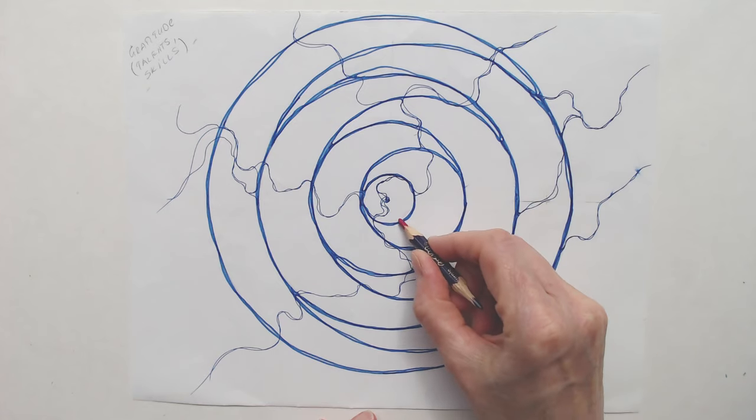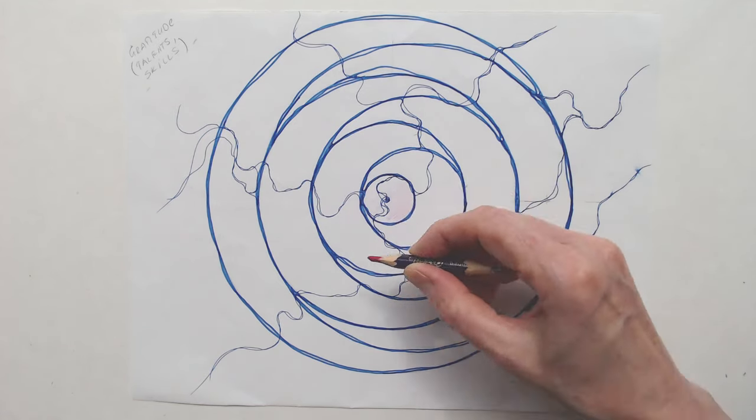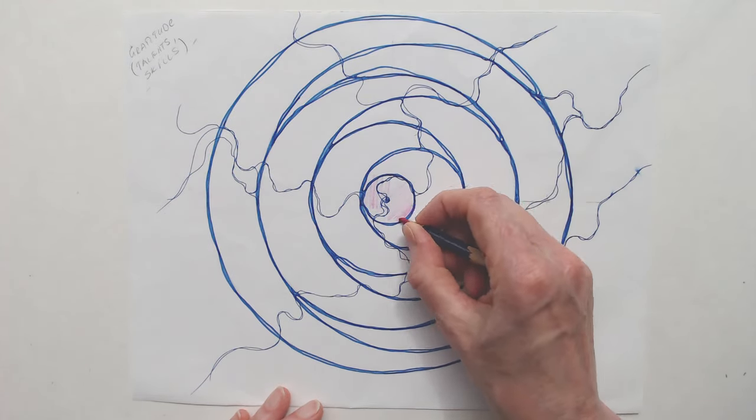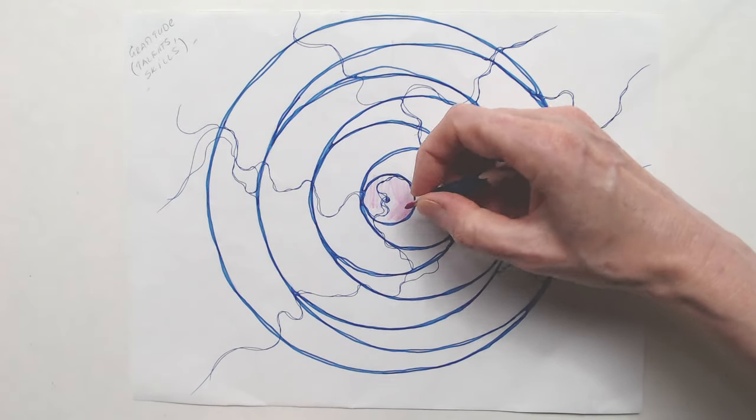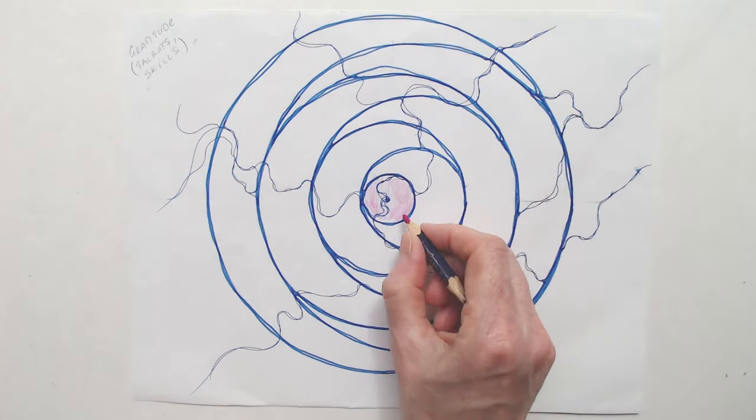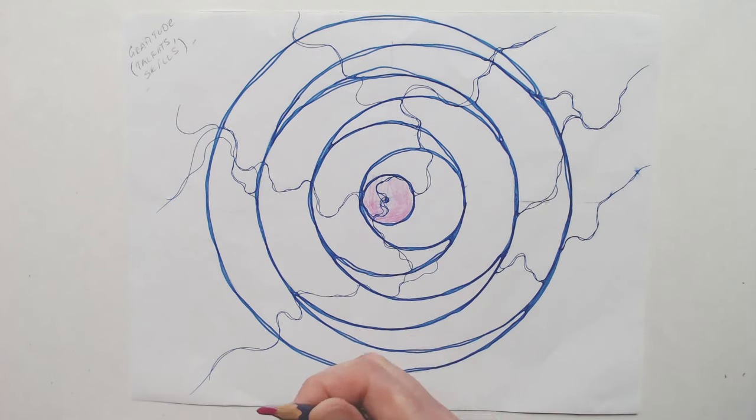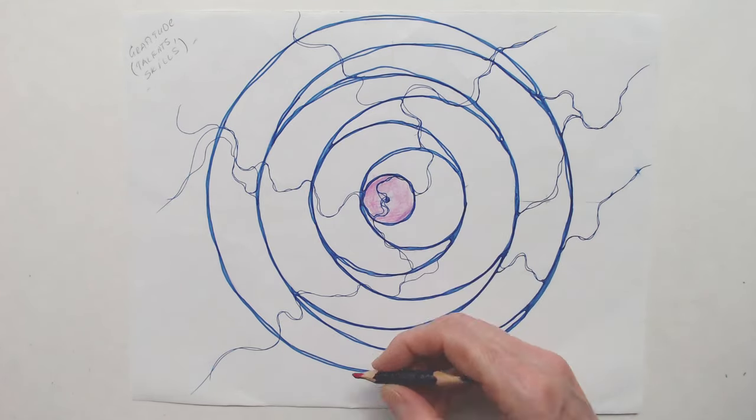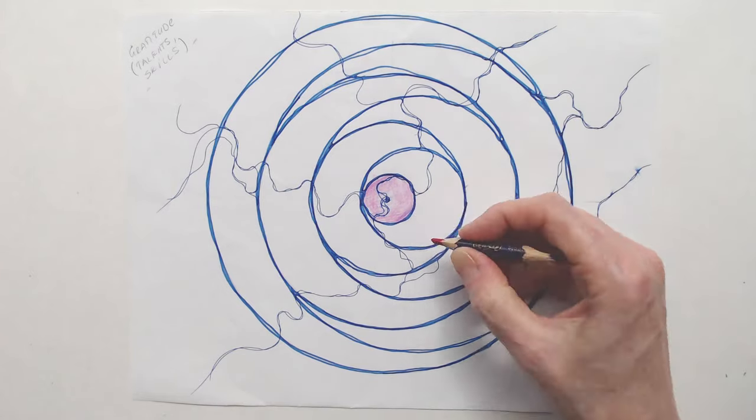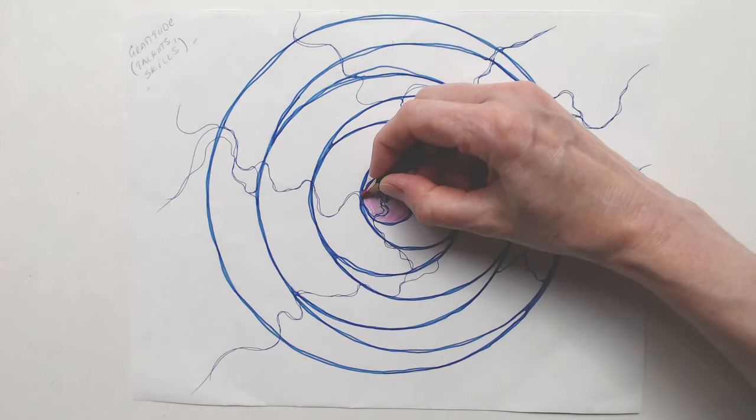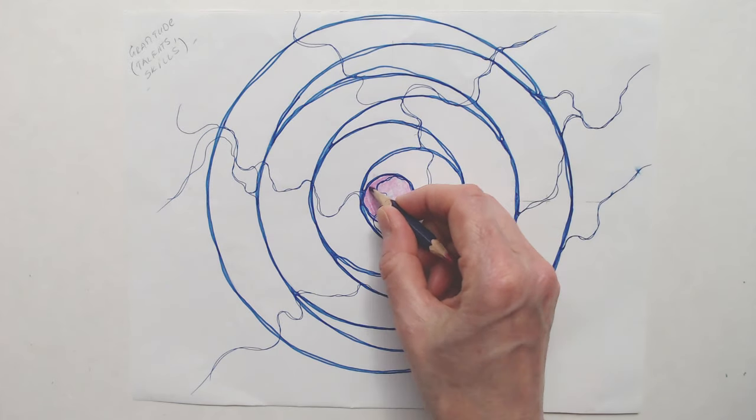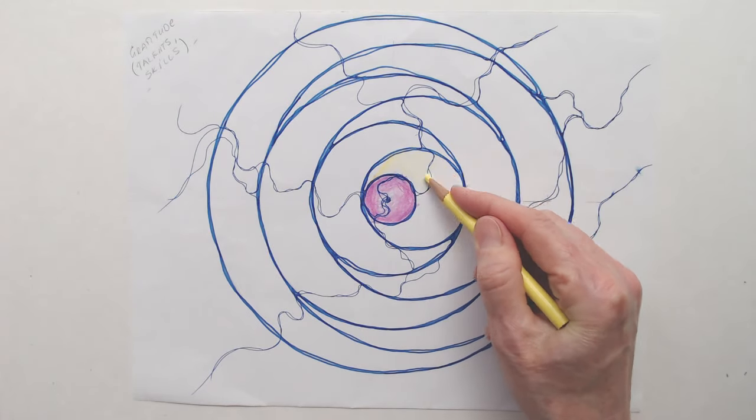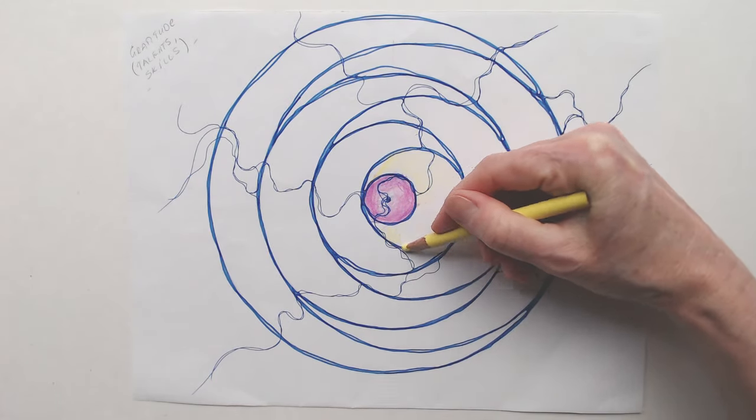As we move into the coloring stage of our drawing, let's explore how colors can affect our energy and enhance our intentions. Each color carries its own unique vibration and meaning, influencing our emotions and state of mind in powerful ways. Yellow is the color of joy, clarity and optimism. It energizes our spirit and encourages a bright outlook on life. Imagine yellow as the sun's warm rays, filling you with confidence and happiness.